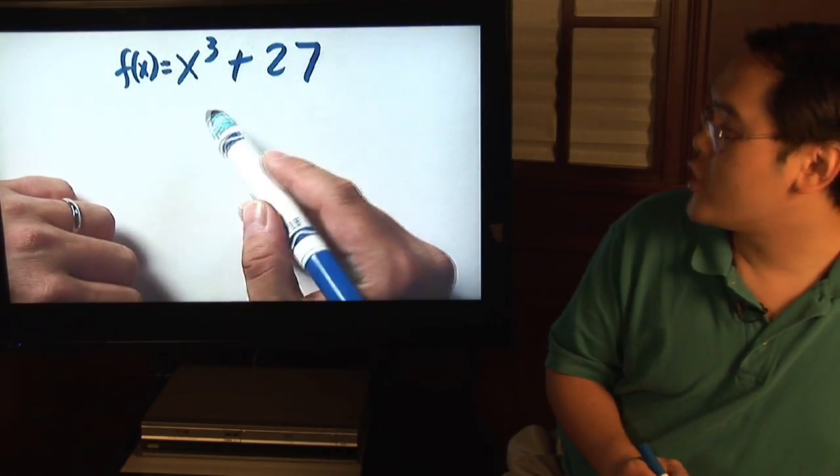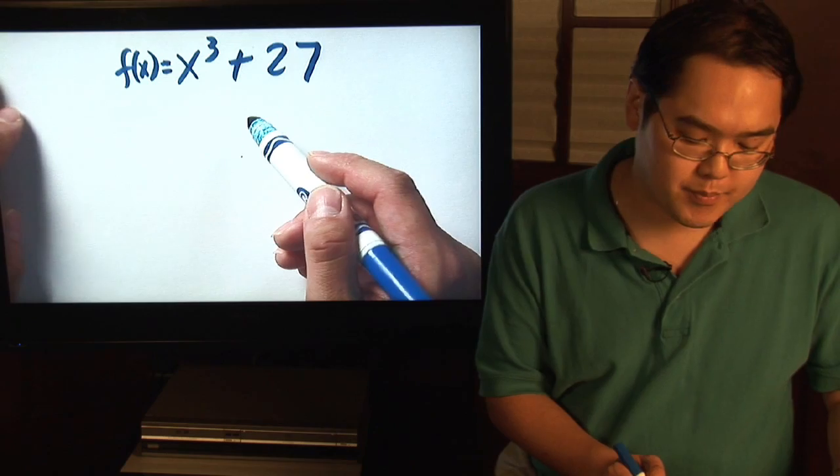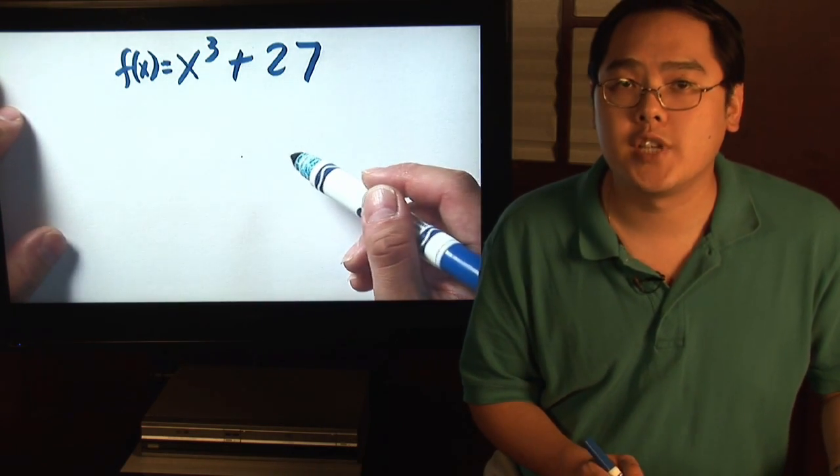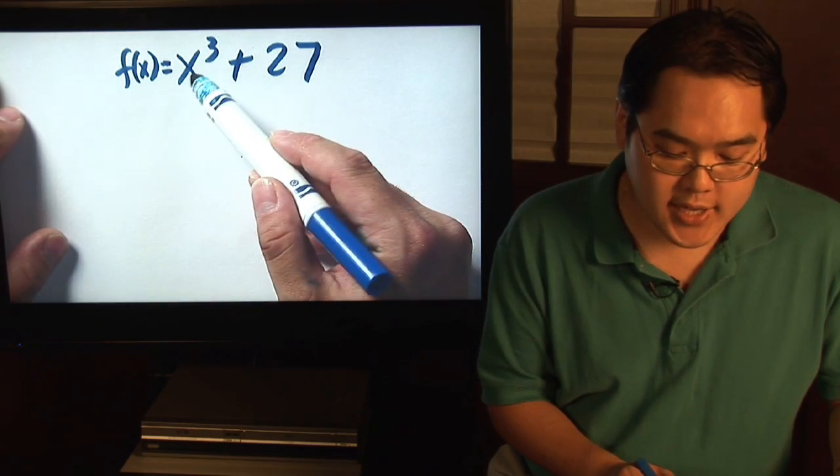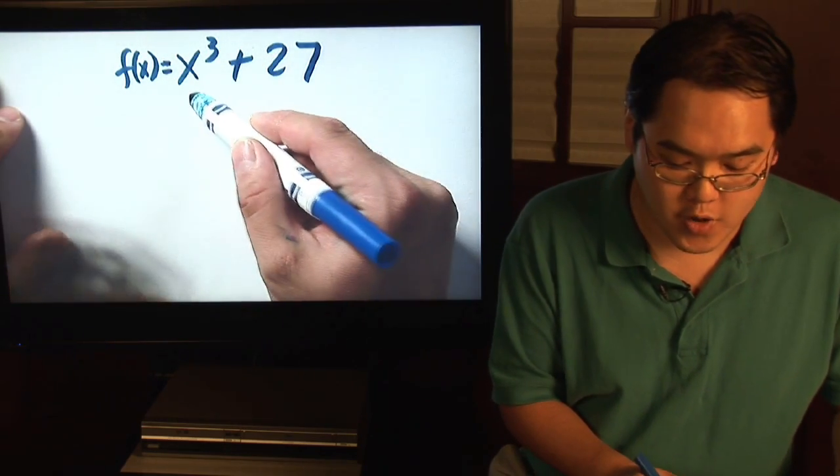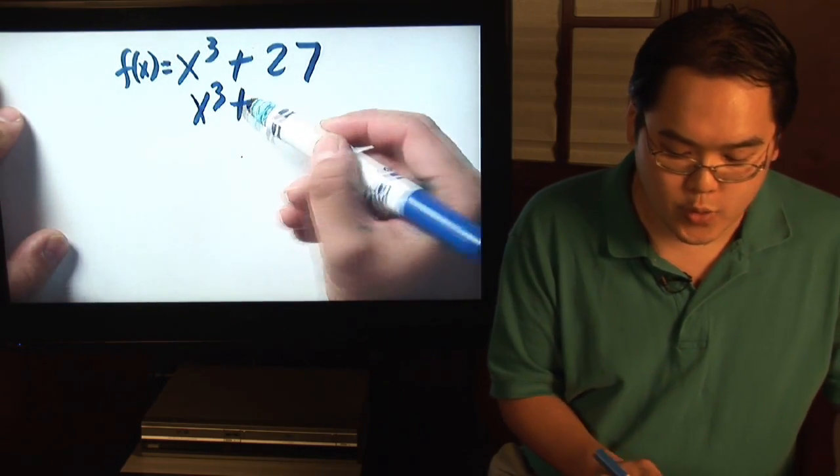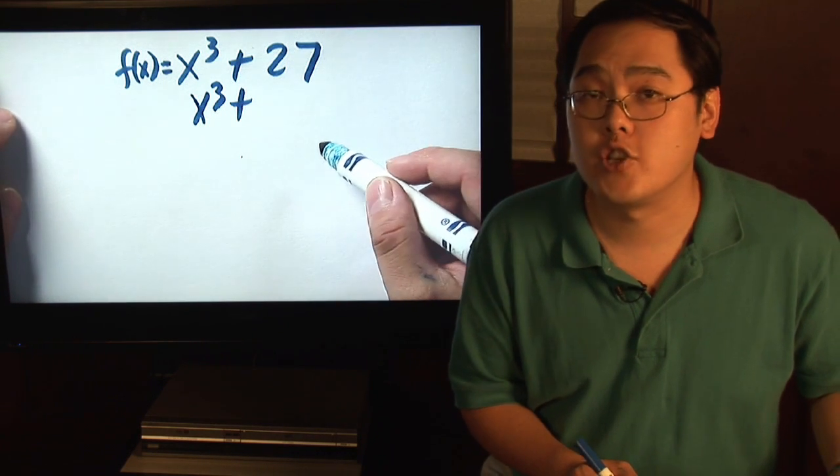Suppose you wanted to factor x cubed plus 27. Now what you have to think about first is write the two terms as cubes. Now x cubed is already a cube so you don't have to worry about that. However, with 27 you have to think about it in terms of cubes.